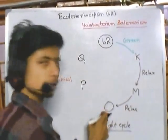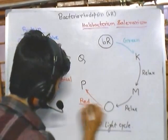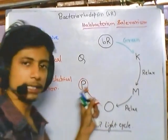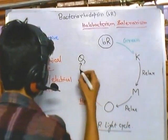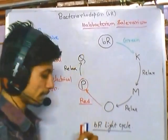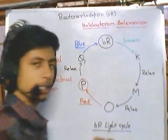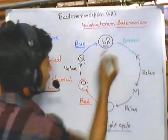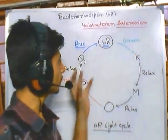After the O form, the protein can receive red light — a longer wavelength. When it gets red light it is brought into the P form, with further excitement. From the P form it again relaxes into the Q form. Once in the Q form relaxation stage, it finally receives blue light. When it gets blue light it is converted back into the actual base structure of bacteriorhodopsin, which is BR. That completes the whole cycle.